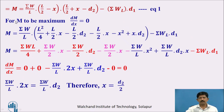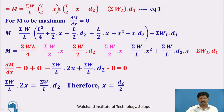To find out the maximum bending moment, we take dM/dx equals 0. Multiplying out the brackets: summation of W by L into [L²/4 plus (L/2)X minus (L/2)D2 minus (L/2)X minus X² plus X·D2], minus summation of WL into D1.